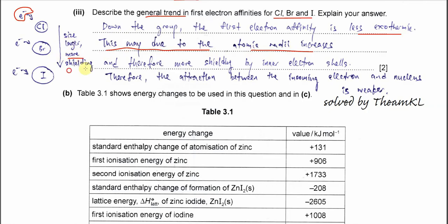Because the size increases, therefore it has more shielding. Because the size is controlled by the number of electron shells. When size is larger, we know that electron shells are more. Therefore more shielding. More shielding means the attraction of the nucleus towards the incoming electron is weaker. That's why it's less exothermic. Therefore more shielding by inner electron shells. More shielding means attraction between the incoming electron and the nucleus is weaker. Therefore it releases less energy. So less exothermic. That's how you explain the trend.